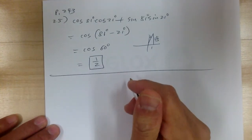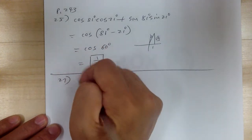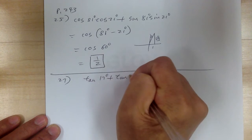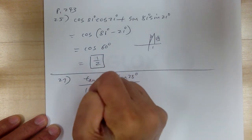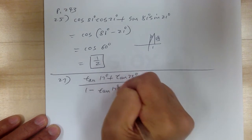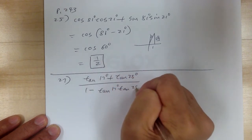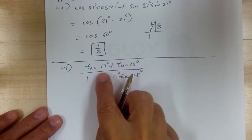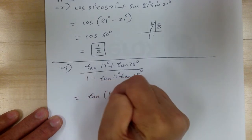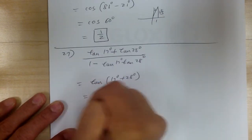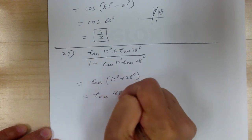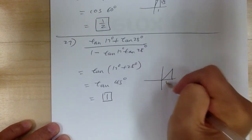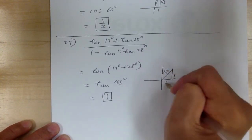Make sure you know your identities. Number 27: you have tangent of 17 degrees plus tangent of 28 degrees, over 1 minus tangent of 17 degrees times tangent of 28 degrees. This is your tangent sum identity, so this equals tangent of 17 plus 28 degrees, which is tangent of 45 degrees, and that equals 1. From the reference triangle, you get 1 over 1, which gives you 1.